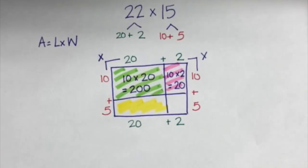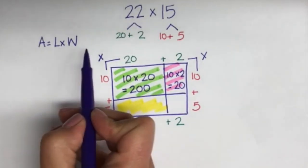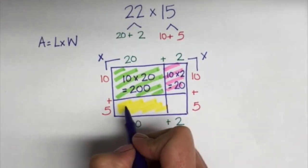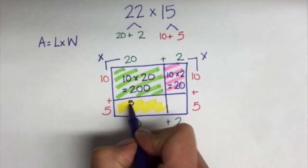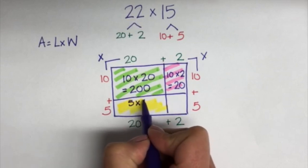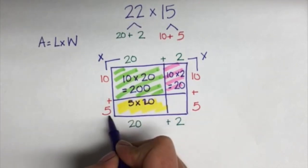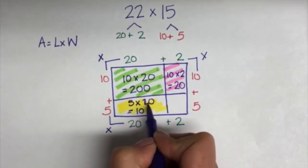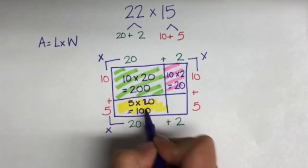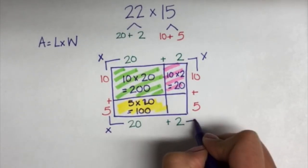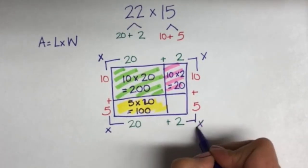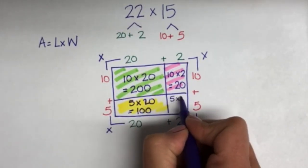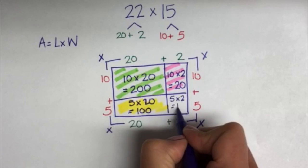Moving on to the yellow section, we are again going to multiply the length times the width. That will be 5 times 20. 5 times 20 is an easy number to work with — we can do 5 times 2 and add a zero, so we have 10 plus a zero, which is 100. And lastly, our corner box is 5 times 2, because it has a length of 5 and a width of 2, and that will equal 10.